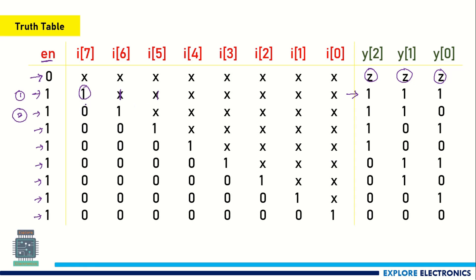When the highest priority value i7 is 0, the encoder checks if i6 is 1. If i6 is 1, it will not check lower priority inputs and it will be encoded to 110. Similarly, the next priority is for i5 — it will encode to 101 when i5 is equal to 1 and the higher priority inputs are 0. The different encoding cases continue down, and when i0 is considered — meaning all higher priority inputs are 0 and i0 is 1 — it will be encoded to 000.